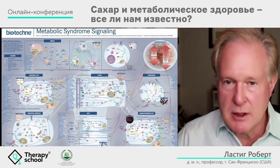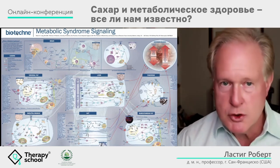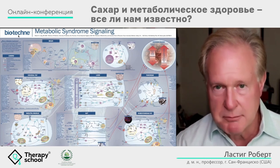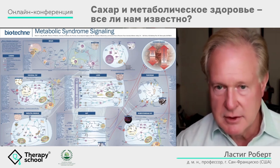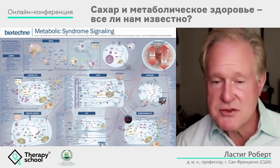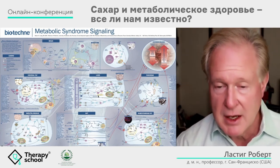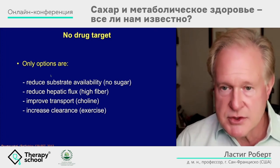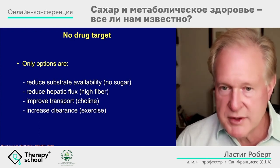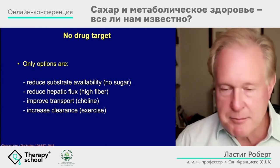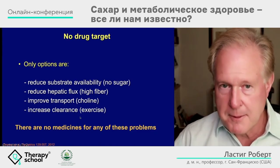My colleague Dr. Alejandro Gugliucci and I developed a poster — available free from the Biotechnic website — showing the liver as the central factor in metabolic syndrome and all the affected organs. What do you do about this? There is no medicine. The only options are: reduce substrate availability — no sugar; reduce hepatic flux — high fiber; improve transport — choline; and increase clearance — exercise. Diet and exercise, but for a different reason — not calories, but these metabolic phenomena. Processed food is the experiment that failed: high sugar, low fiber.